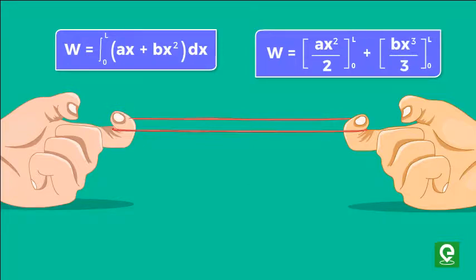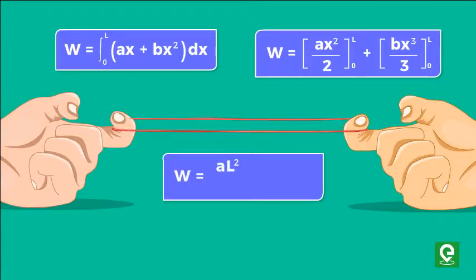Substituting integral limits and solving gives us W = aL²/2 + bL³/3.